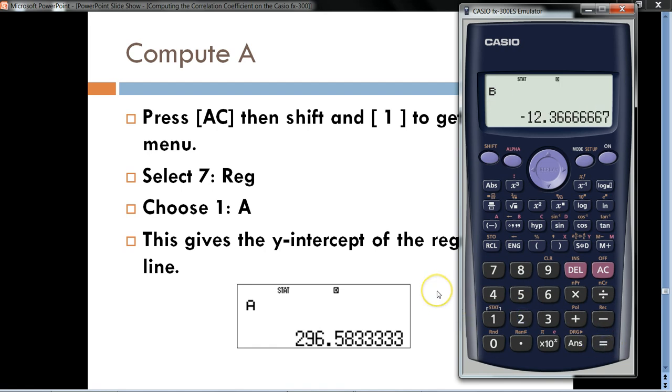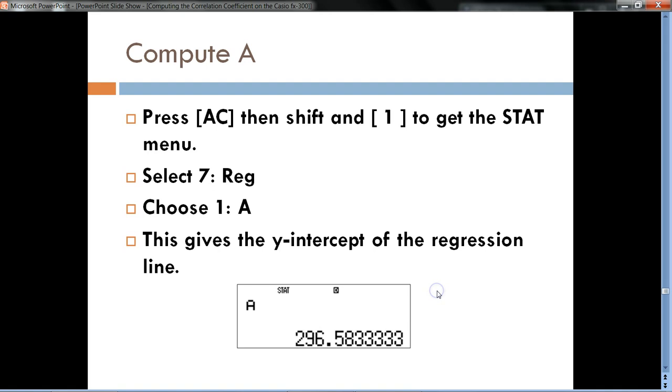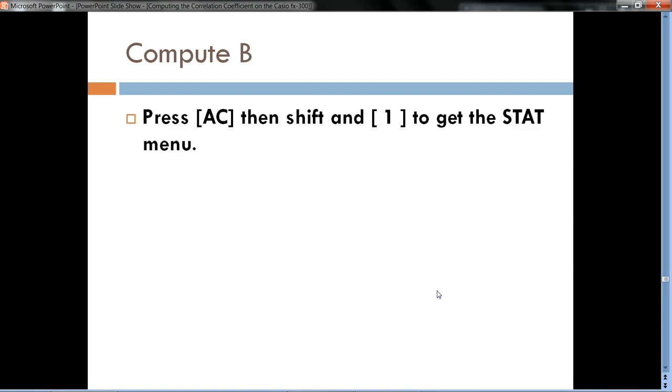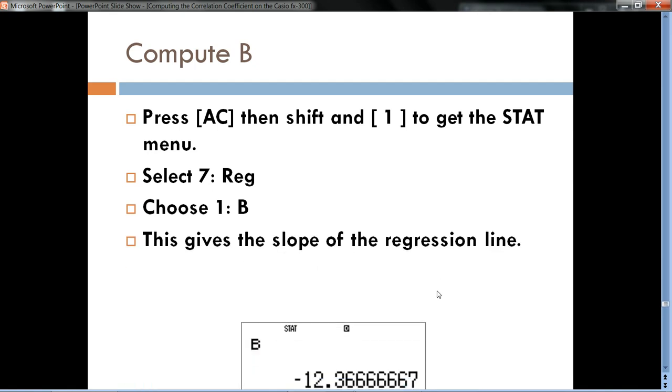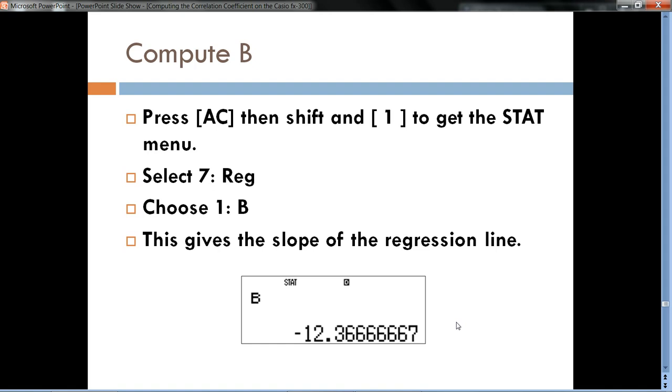So, there it is right there. Just as we expected, the slope is negative. Negative 12.367. Again, rounded to three decimal places by convention. All right. So, we hit AC. Got the stat menu. We hit B. And that gave us the slope of the regression line.